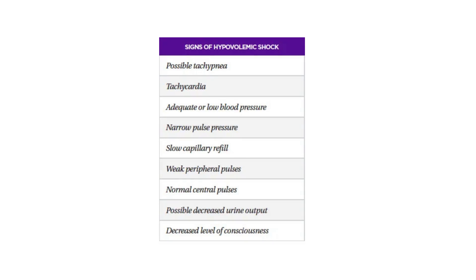Signs and symptoms of hypovolemic shock include possible tachypnea, tachycardia, adequate or low blood pressure, narrow pulse pressure, slow capillary refill, weak peripheral pulses, normal central pulses, possible decreased urine output, and decreased level of consciousness.